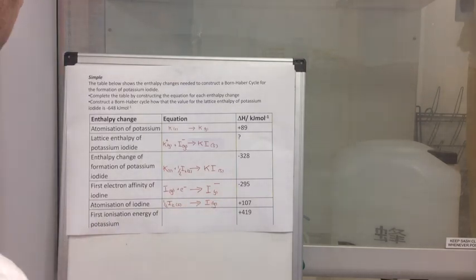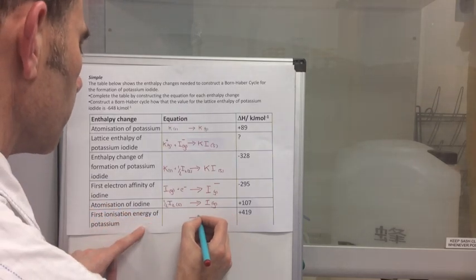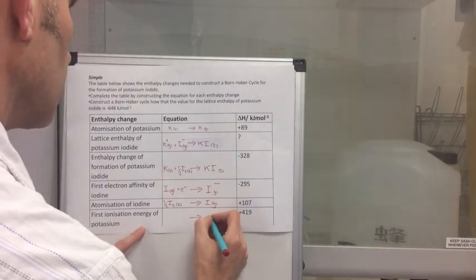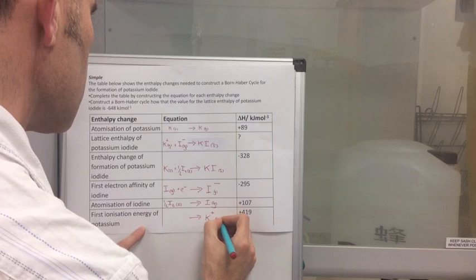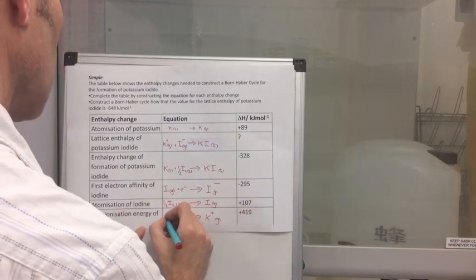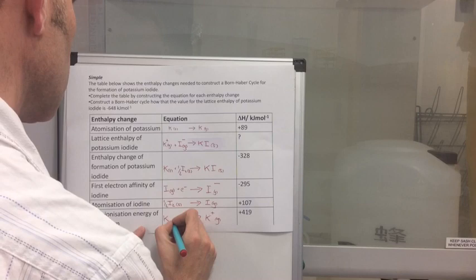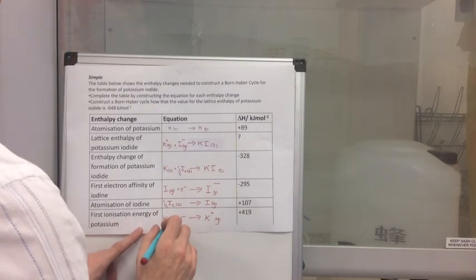And the final one, the first ionization of potassium. That's the formation of one mole of one plus ions. So that's K+ gas from one mole of atoms, gaseous. So there's the electron that's involved there.